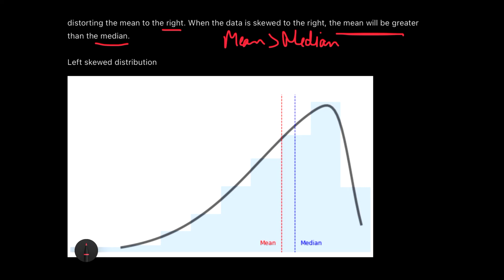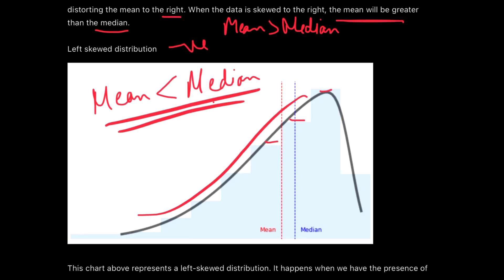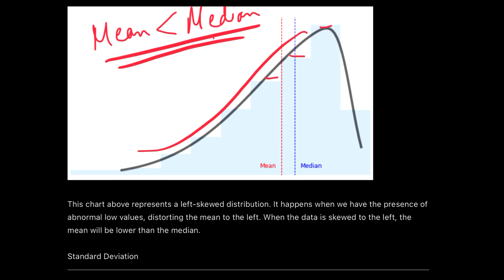Similarly, left skewed distribution is when the maximum values are accumulated on the right-hand side and we have a tail kind of feature on the left side. In this situation, the mean is shifted to the left side as per the name. Left skewed distribution means the mean will be shifted on the left side and the median will go on the right side. As far as you can see, the value of mean will actually be less than the median. This is also called negative skewed distribution.